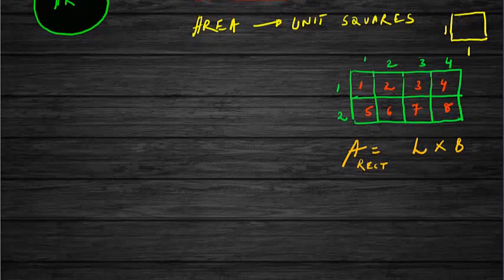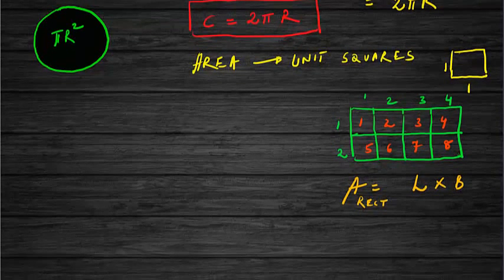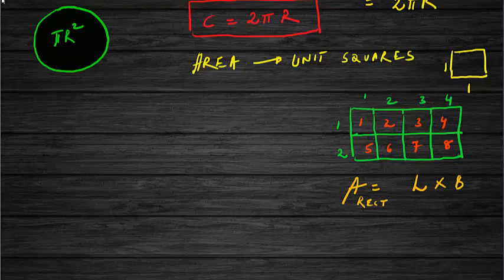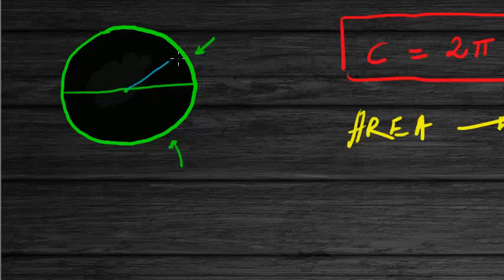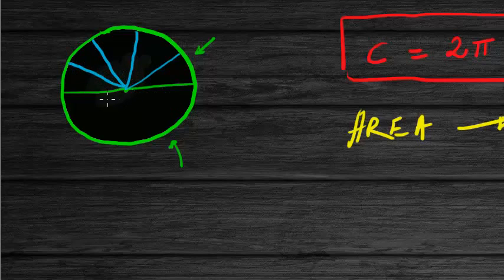It is easy to find the area of a rectangle, but how do we find the area of a circle? Suppose this circle is a pizza. I am going to share this pizza with you: the upper half goes to me, and the lower half goes to you. But before enjoying the pizza, let us do a small experiment. I am going to cut my pizza into slices, and you are going to cut your pizza into identical slices.